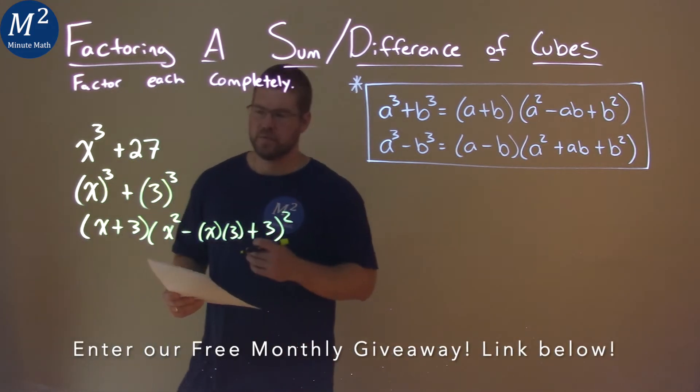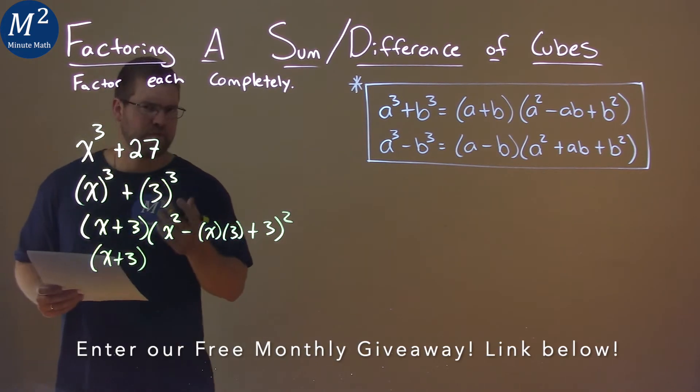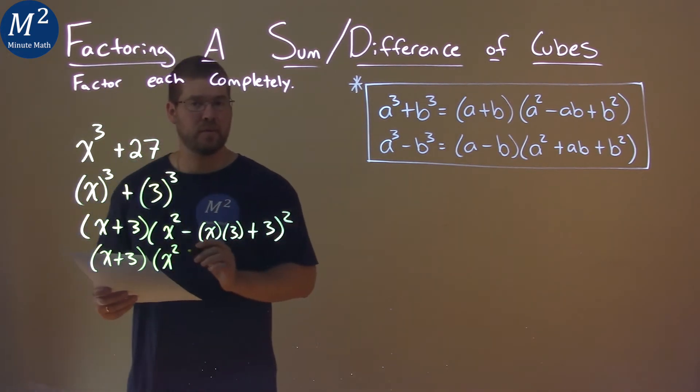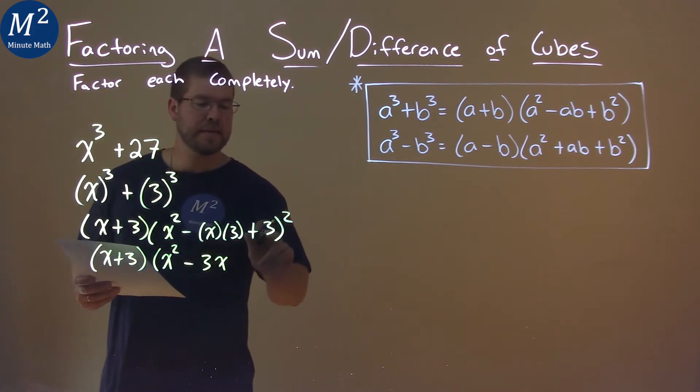Now we want to simplify. x + 3 just simplifies as it is. x² comes down, can't really do anything with that. x times 3, we can write that as 3x, and then...